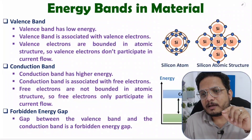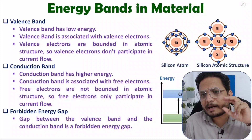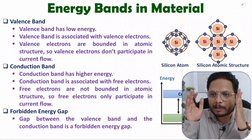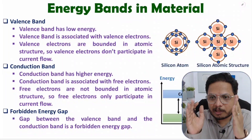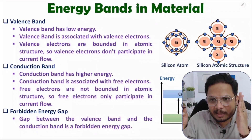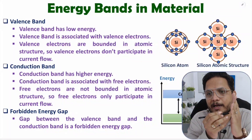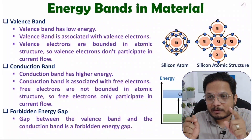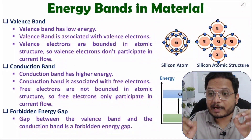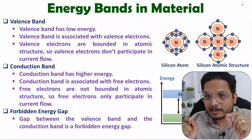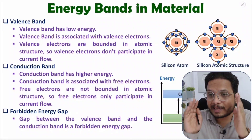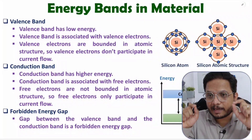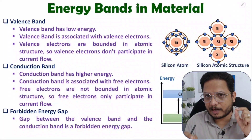Free electrons only participate in the flow of current. Whenever you apply a potential difference between two terminals of a material, flow of current is possible due to free electrons only. Always remember: valence electrons do not participate in the flow of current.